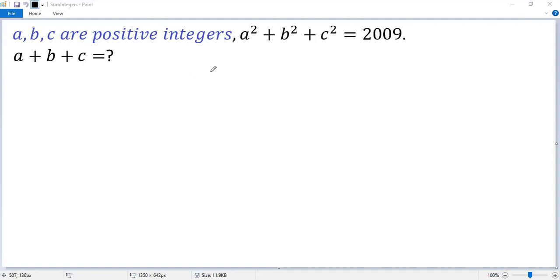To solve this problem, we try to express 2009 as the sum of three perfect squares. To do that, we need to figure out the prime factorization first. We know it is divisible by 7, so we do division.